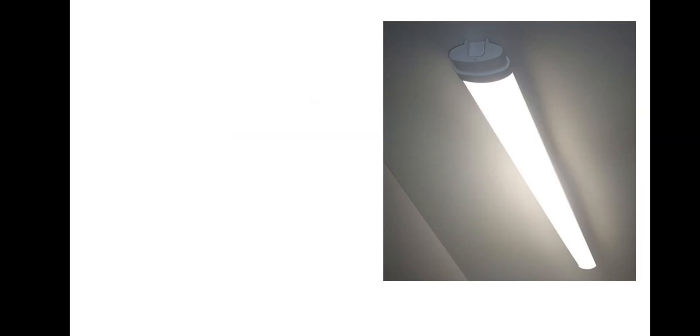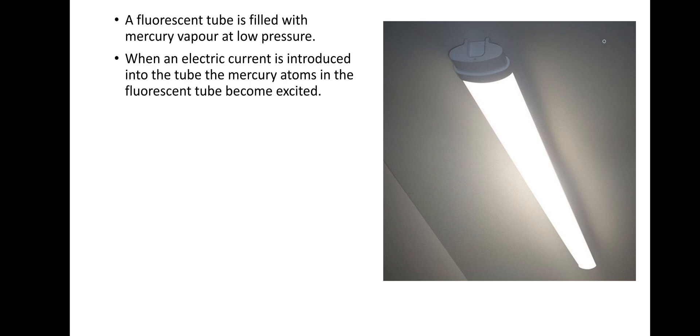Let's move on then. Let's get some new information. So a fluorescent tube is filled with a mercury vapor contained at low pressure. When an electric current is introduced into the tube, the mercury atoms inside the fluorescent tube become excited, which means, of course, that electrons in the ground state has moved into, or have moved, into a higher energy level. So we're exciting electrons from the ground state into a higher energy level.